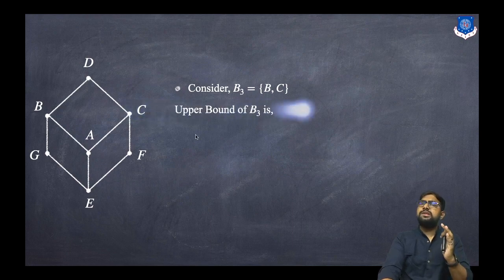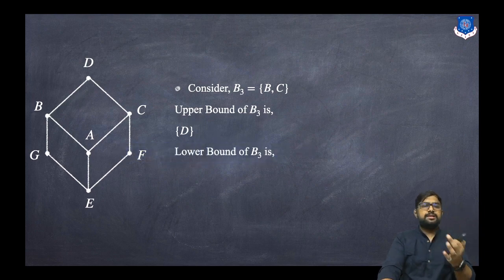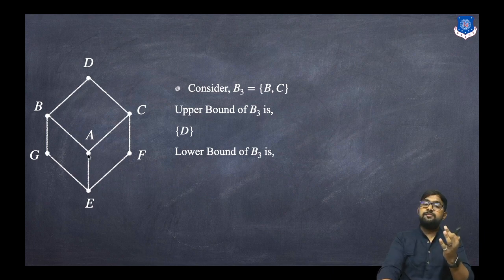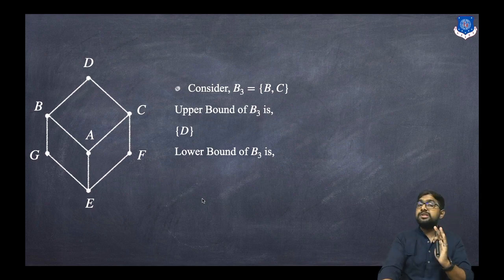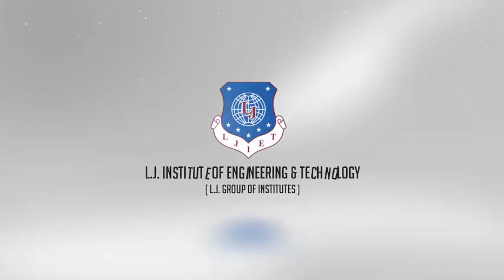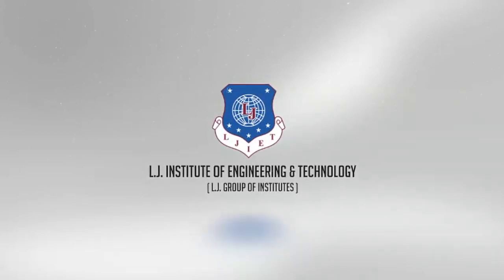The last set is B3 = {B, C}. For upper bounds, D is the only upper point — we can go from B to D and C to D — so D is the upper bound. For lower points, G, A, E, and F are candidates. We cannot go from G to C, so G is not a lower bound. F also cannot be a lower bound. We can go from E to B and E to C, and from A to B and A to C — so A and E are the lower bounds.